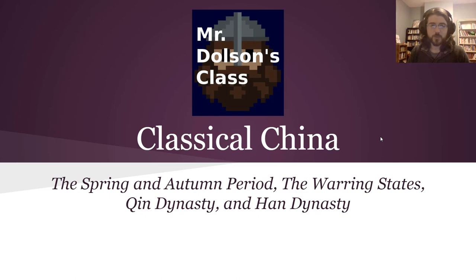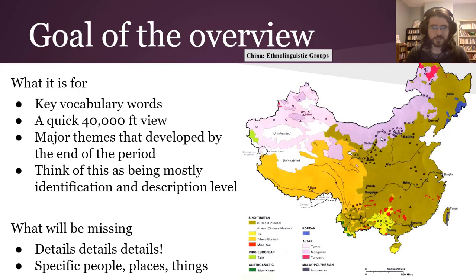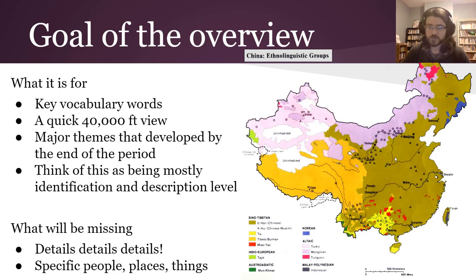Hey there and welcome to this video about Classical China. First, just a reminder about the goals of this overview and this cool map of ethno-linguistic groups in China. You can see the brownish area — that's the area in modern China where the Han Chinese ethnic group lives or is most common. Around the borders there are other ethnic groups, and some people are up in the hills in mountainous regions. We're about to learn where that name comes from.